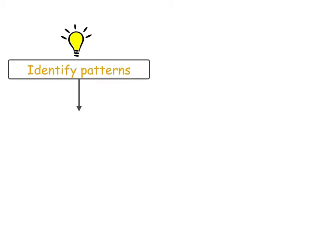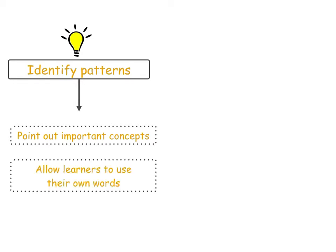Young learners start by identifying patterns. Allow them to tell you what is and what is not a pattern and point out concepts which would make something a pattern. Learners should use their own words to explain why or why not something is a pattern. You may elaborate on their answers.